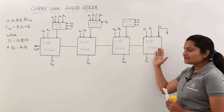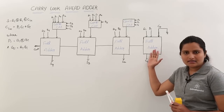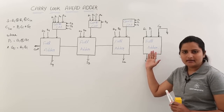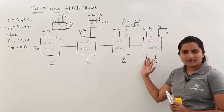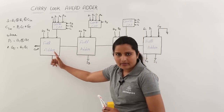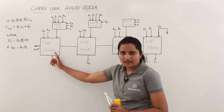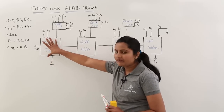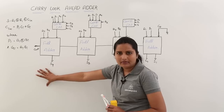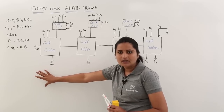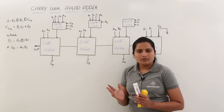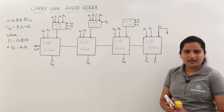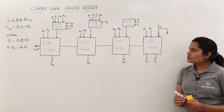This first adder is an LSB adder — that means least significant bit adder. This last position adder is the MSB adder, meaning whatever sum we get there is the most significant bit.